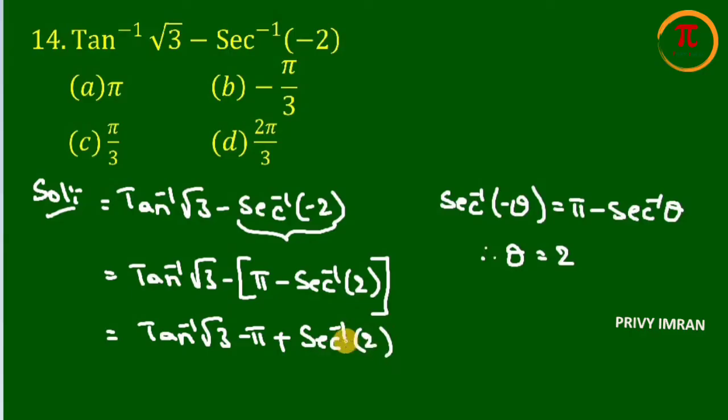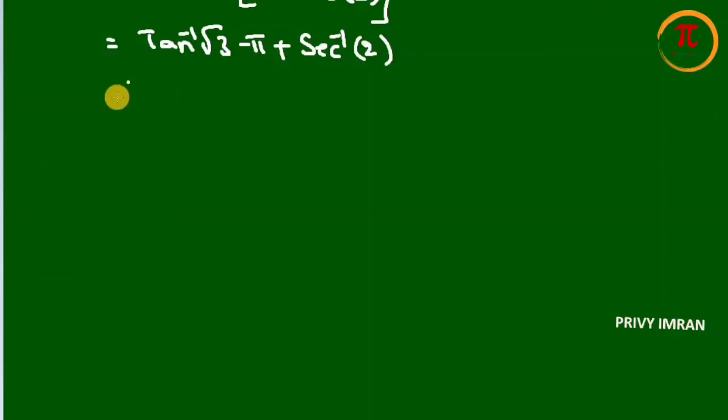Now here we already know that tan inverse of root 3 value is pi by 3 minus pi plus secant inverse of 2 value is pi by 3. Now if I take here 3 as LCM.